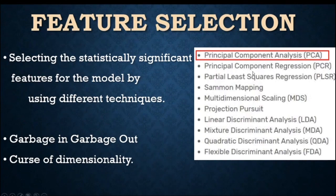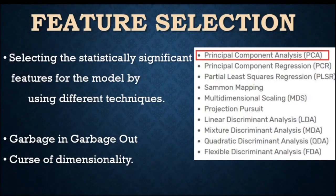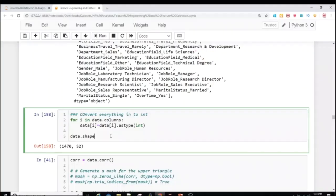There are a number of techniques — Principal Component Analysis, Principal Component Regression, and others. There is nothing right or wrong; you can use different techniques and go with whichever gives good results. In this video we will use correlation and PCA to drop less significant features. Without further delay, let's start.